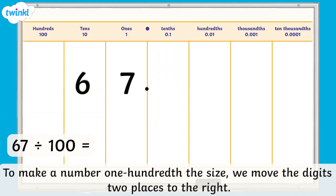Let's take a look at how this works when dividing numbers by 100. To make a number one hundredth the size, we move the digits two places to the right. This is equivalent to dividing by 10 two times.